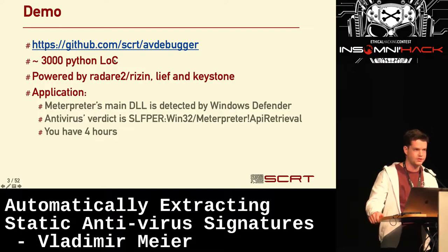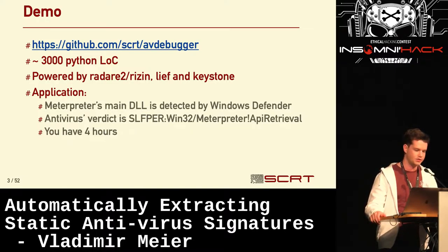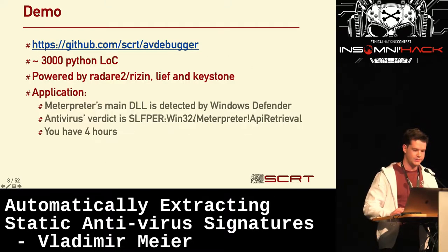The tool will be open sourced on GitHub after the talk. It's 3,000 lines of Python code, and if it's that small, that's because we are standing on the shoulders of giants, thanks to frameworks such as Rizin, LIEF, and Keystone. The demo I've just started is about Meterpreter because I'm a pen tester and we like to use Meterpreters — and we won't stop doing that. It works very well, but obviously it's detected by many antivirus engines. The signature's name is something like Meterpreter API retrieval, which doesn't mean much to me.